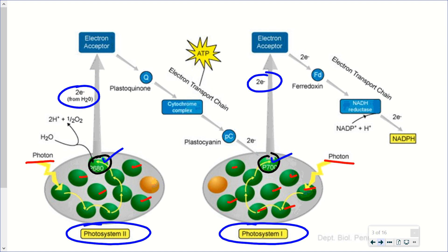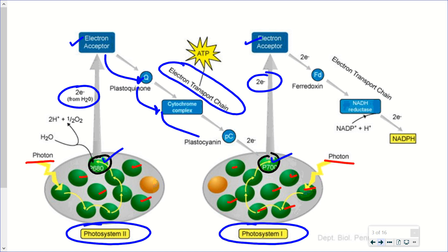Where these electrons go initially is to an electron acceptor. So the chlorophyll is oxidized, and these electron acceptors are then reduced in the process. From these electron acceptors, the electrons are passed on through the electron transport chain. There is one portion of the electron transport chain between photosystem 2 and photosystem 1, and the electron is passed down the line, eventually replacing the electrons lost from photosystem 1.